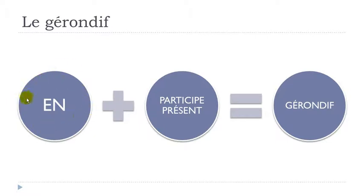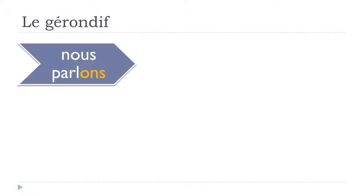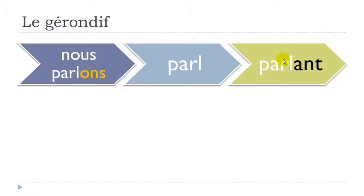To make the gérondif, remember: first use la préposition EN, then add le participe présent. To form the participe présent, you take the nous form of the present tense. For example, parler — to speak — gives nous parlons. You spot the ending ONS, take it away to get PARL, then add ANT to get PARLANT. This is the participe présent form you add after the preposition EN.